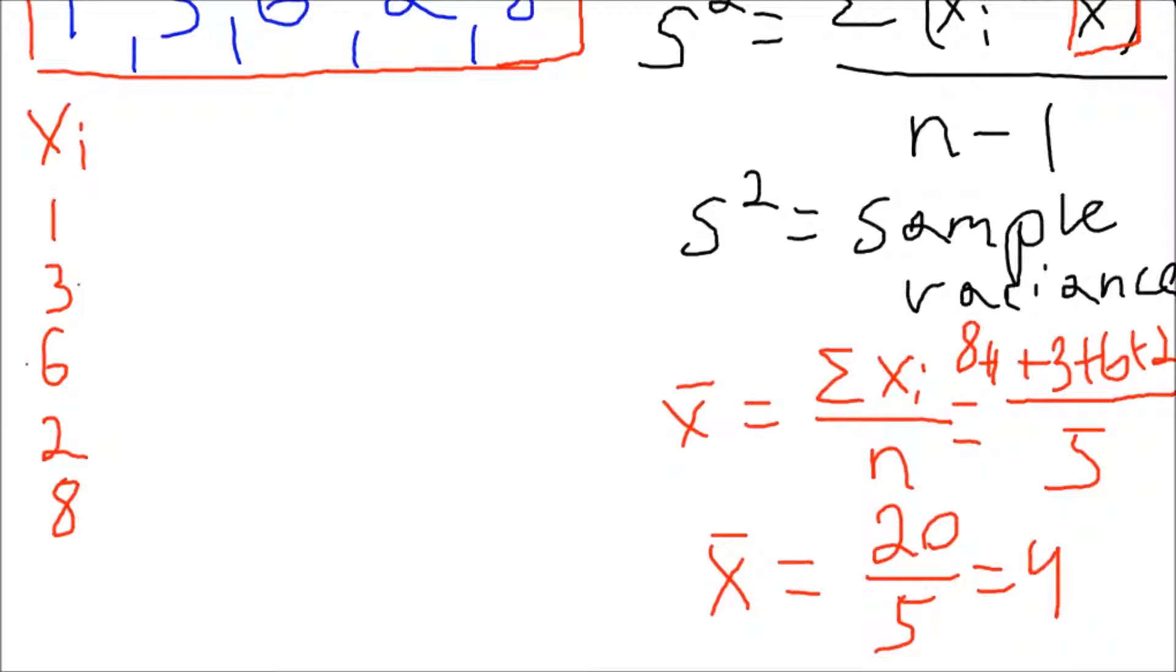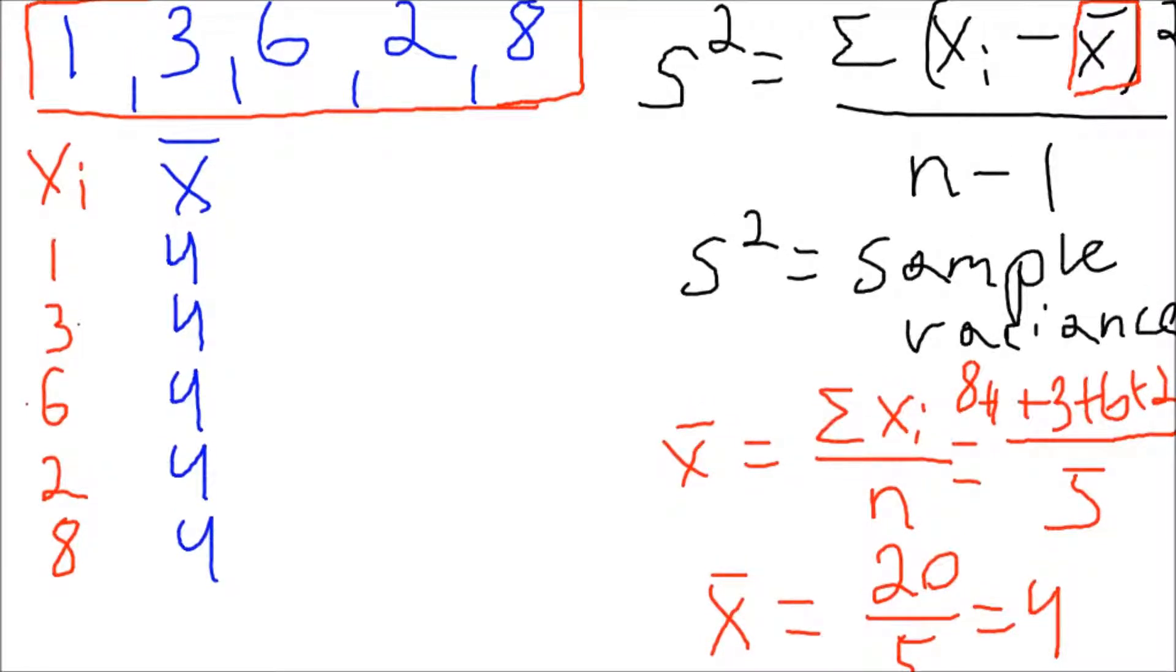So, we'll just add another column for the mean here, which is basically just one value, 4. Now, the next term we're going to add is we're going to take the x_i terms minus the mean, which is basically taking this, subtracting it from the x_i terms here.